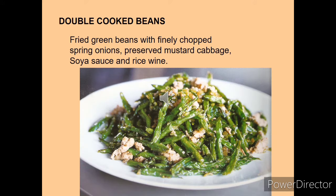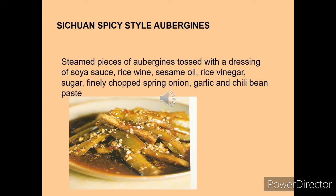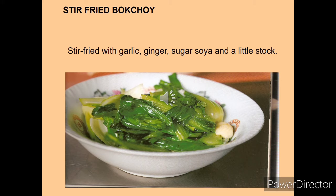Double cooked beans: fried green beans with finely chopped onion, mustard cabbage, soy sauce and rice wine used to flavor them. Sichuan spicy style aubergines: steamed pieces of aubergine are tossed with a dressing of soy sauce and other ingredients; finely chopped spring onion, garlic and chili bean paste are also used. Stir-fried bok choy: bok choy is stir-fried with garlic, ginger, sugar and soy sauce in a little stock in the wok.